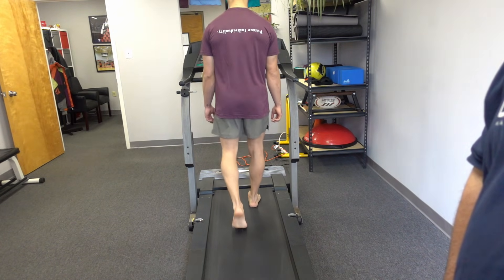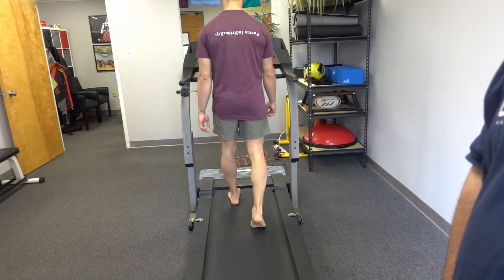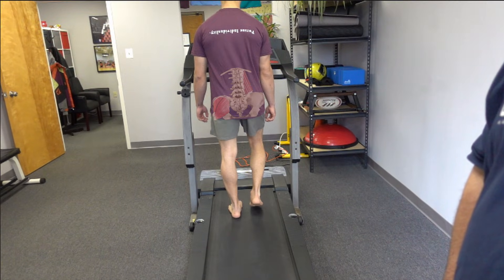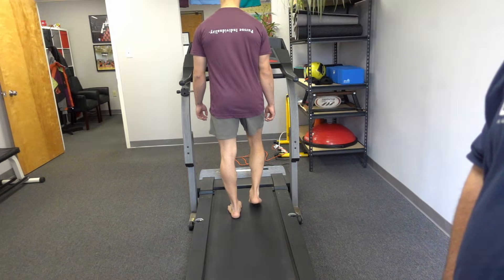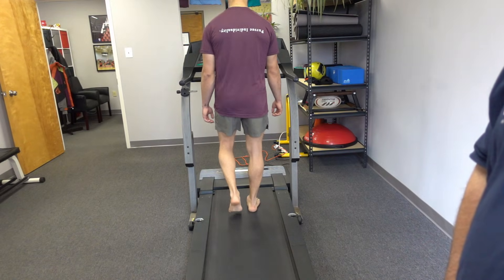The hip abductors on the stance leg work in coordination with the quadratus lumborum on the opposite side. Together they keep the trunk and pelvis stable during single leg stance. The same pattern occurs during stance on the opposite side.